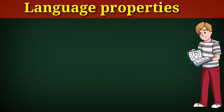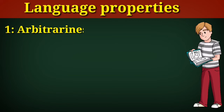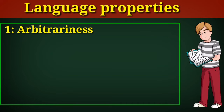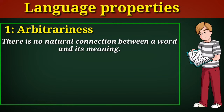The first one is arbitrariness. What does it mean by arbitrariness? Basically, it is one of the properties of language that refers to the fact that there is no natural connection between a word and its meaning.